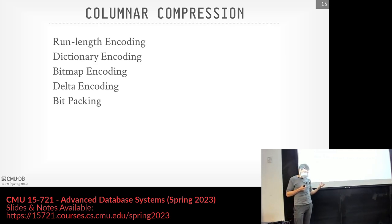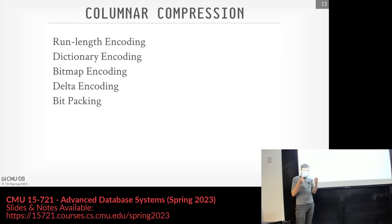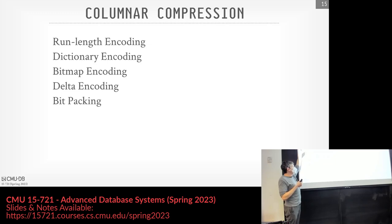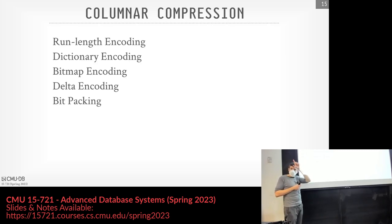That's the key idea for what we want to show in columnar compression: is there a way to encode the data such that we may be able to operate on it directly without having to decompress everything first. We sort of saw this last class with the bit-weaving stuff, and bitmap indexes are essentially another way to compress things — representing data in a smaller form to get more bang for the buck for any amount of CPU time. We'll go through several different examples: run-length encoding, dictionary coding, bitmap encoding, delta coding, and bit packing.